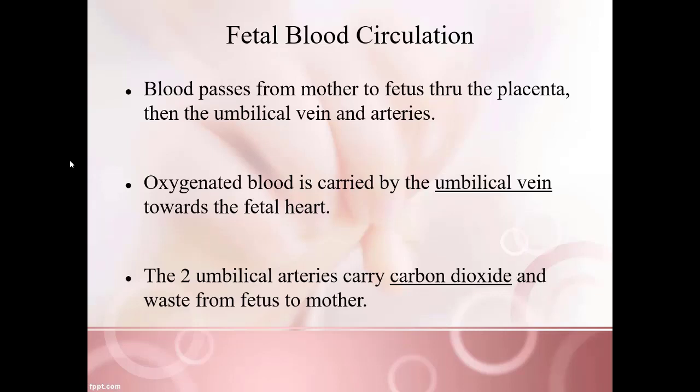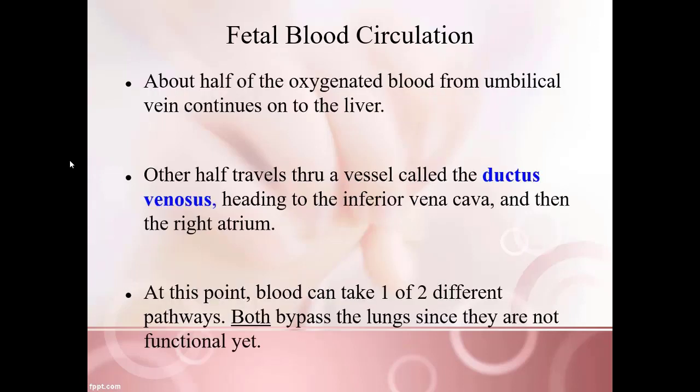Blood goes from the mother to the fetus through the placenta and then the umbilical vein and arteries. Oxygenated blood is carried by the umbilical vein — there is only one — toward the fetal heart. The two umbilical arteries carry carbon dioxide and other waste from the fetus to the mother. About half of the oxygenated blood from the umbilical vein continues on to the liver; the other half travels through a vessel called the ductus venosus, going directly to the inferior vena cava and then to the right atrium.